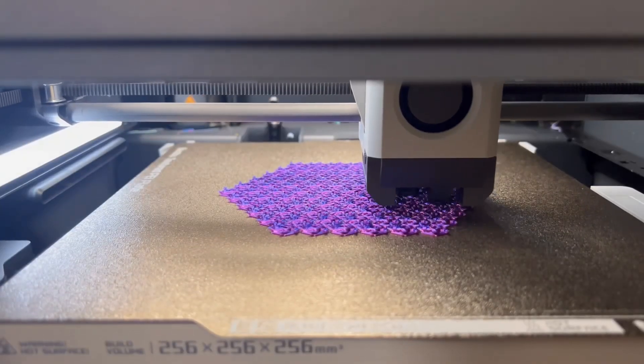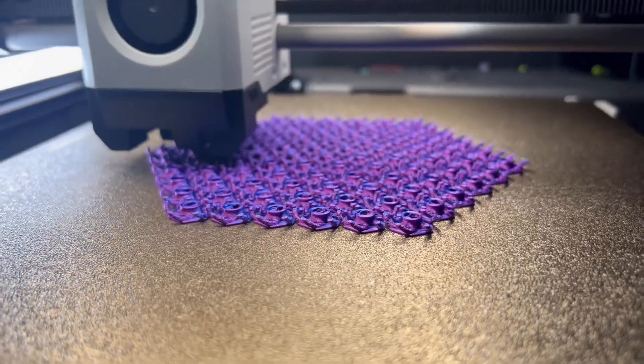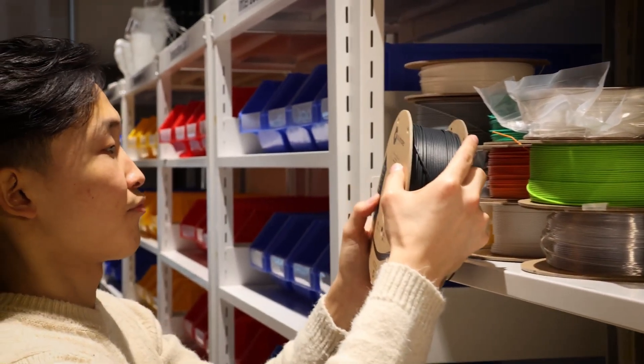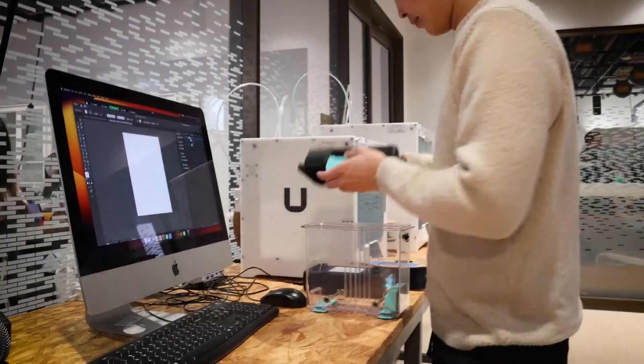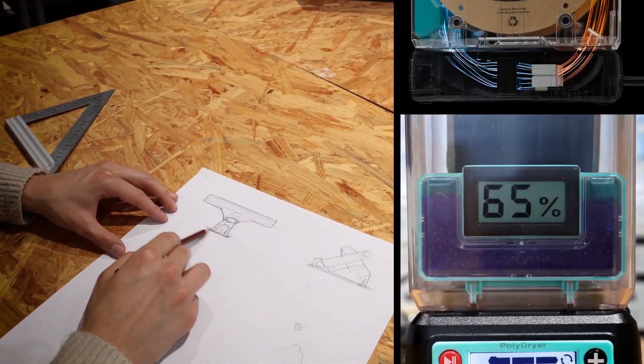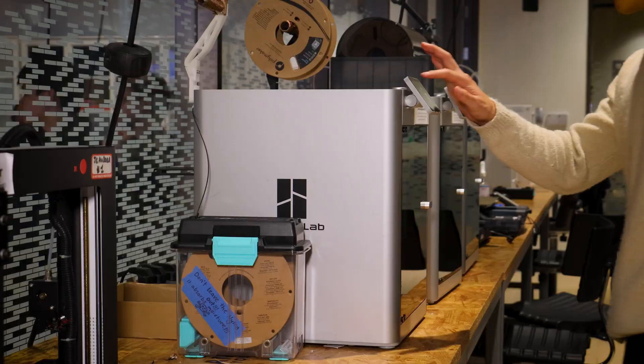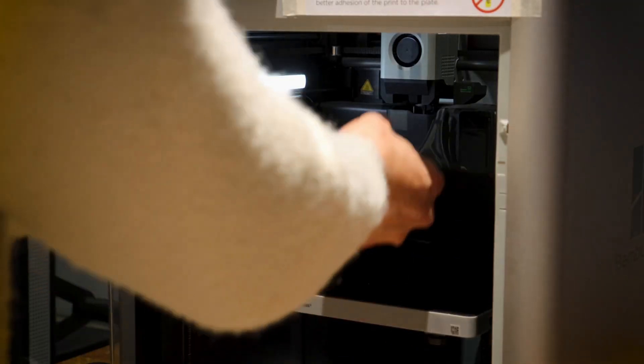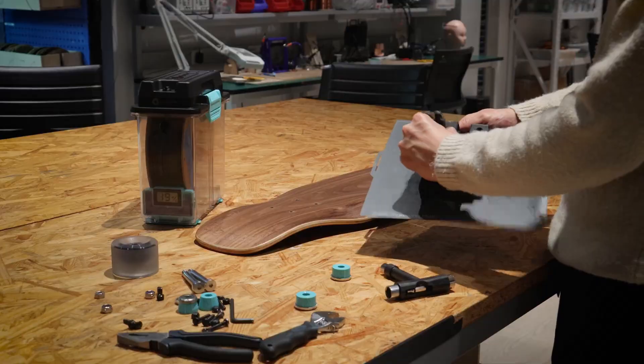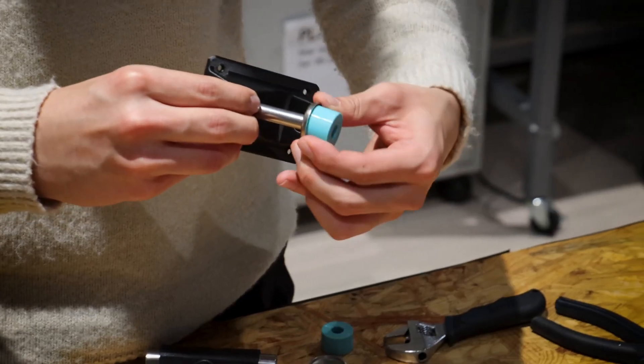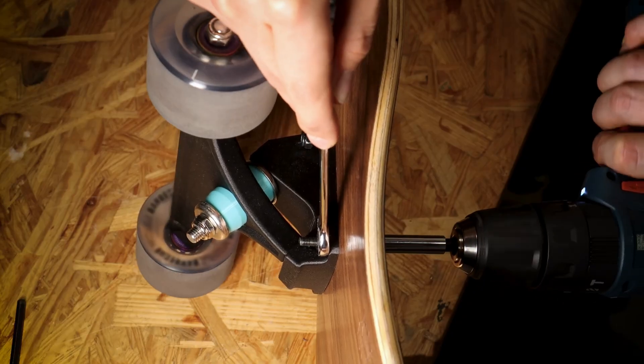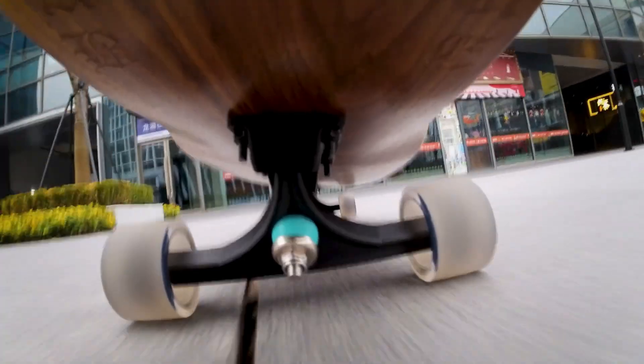PETG can be more challenging to print due to its stickiness and tendency to string and ooze. It requires higher temperatures and careful tuning to avoid issues like nozzle accumulation and poor overhang performance. But despite these challenges, PETG provides excellent layer adhesion and fewer print failures when properly tuned.